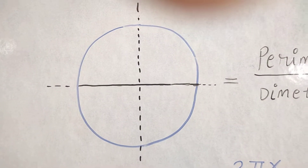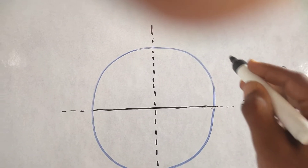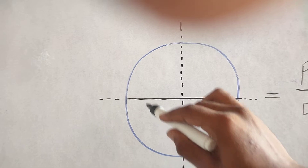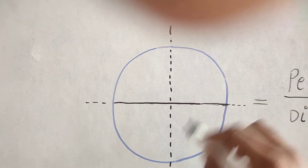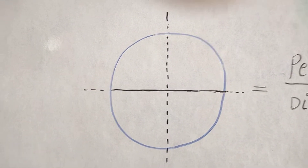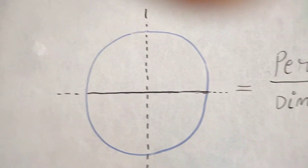Hello friends, my name is Suna Rastogi. This is circle. Blue line is a parameter. This is black diameter.